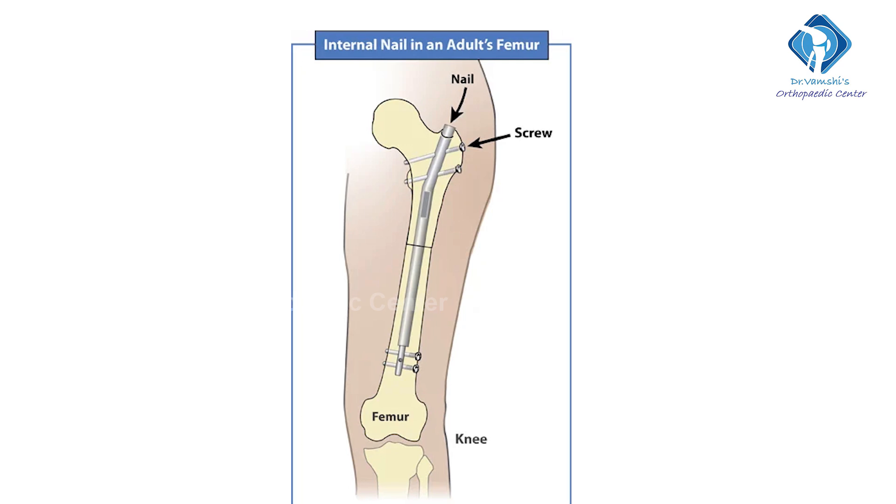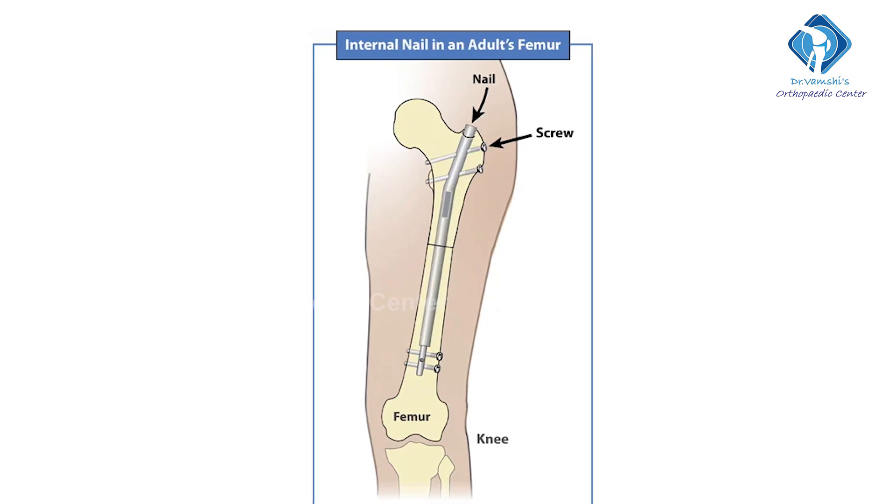The best implant for this is an intramedullary rod placed inside the bone marrow cavity. The marrow cavity accommodates the rod well, providing strength. The rod is placed using a closed surgery technique through the shaft, allowing controlled fixation with relative stability.